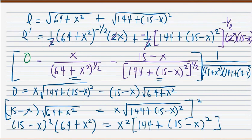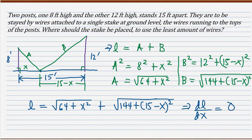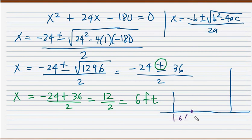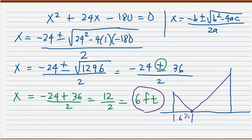Going back to our diagram, X equals 6 feet means we place the stake 6 feet from the shorter pole. This gives us the position of the stake that results in the minimum amount of wire used.